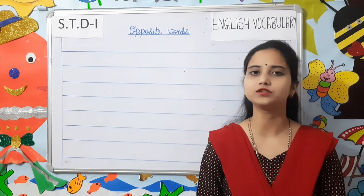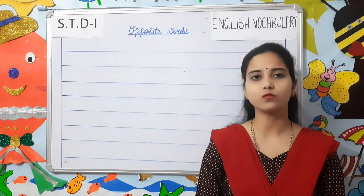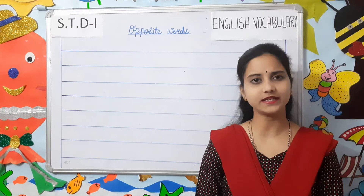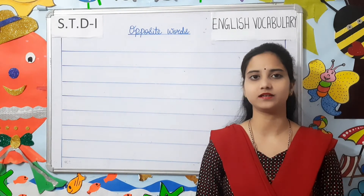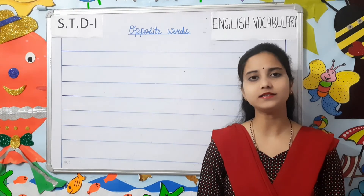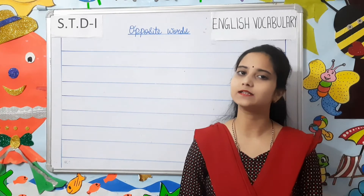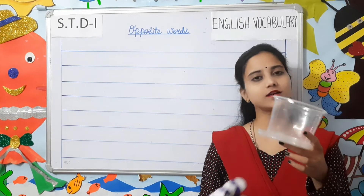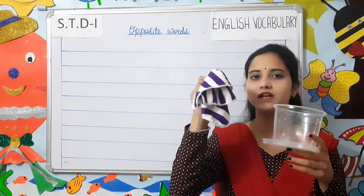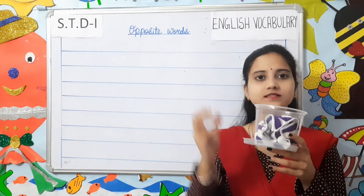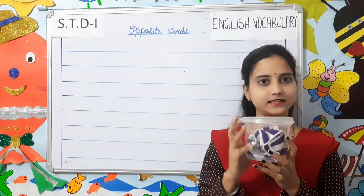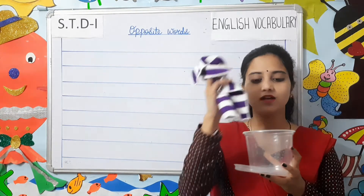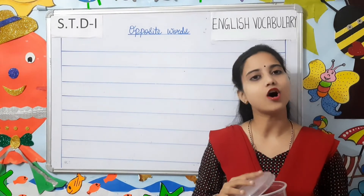Now let us move on to another topic — opposite words. Opposite words are different; they are not the same. A word that expresses a meaning opposite to another word — they are related but they are not the same. Now let me show you an example. You can see a box in my hand and a handkerchief. If I put the handkerchief inside this box, it is inside the box. And if I take it outside, it is outside. So inside and outside are opposite words.